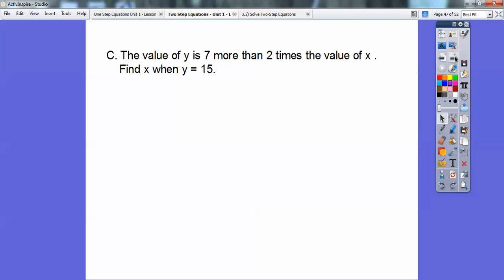All right, let's try an application problem here, a reasonably simple one. So the value of y is—do you know what 'is' means in math? It's an equal sign. So this is the same as y equals 7 more than. 7 more than means something plus 7. So something plus 7. 7 more than 2 times the value of x. So this would be 2x right here. So this would be y equals, and we'll write this first, 2x plus 7.